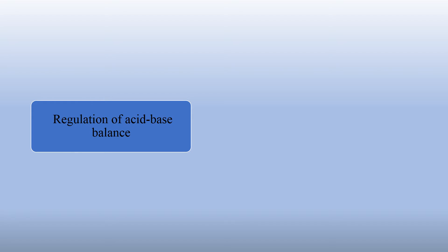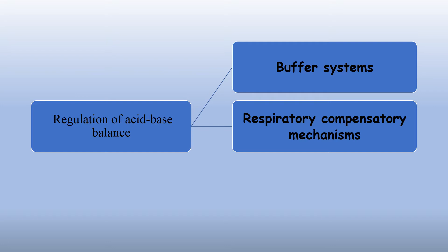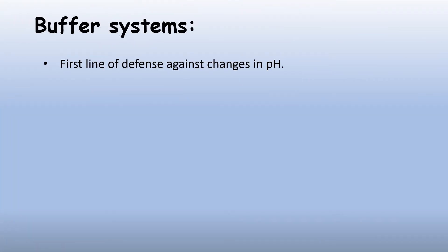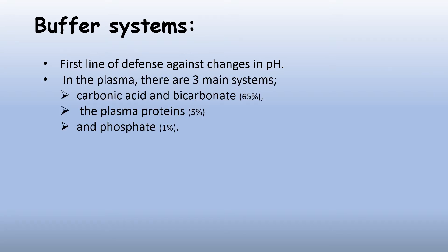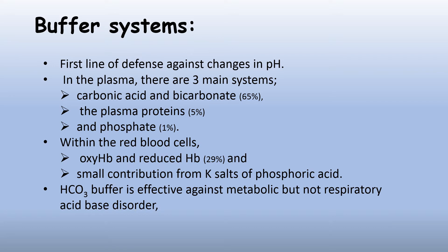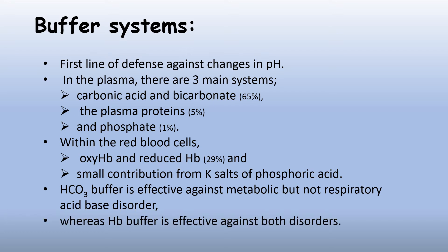Regulation of acid-base balance is done by three mechanisms: the buffer system, the respiratory compensatory mechanism, and the renal compensatory mechanisms. The buffer system is the first line of defense against changes in pH. In the plasma, there are three main systems: carbonic acid and bicarbonate, plasma proteins, and phosphate. Within the red blood cells, there is oxyhemoglobin and reduced hemoglobin, and a small contribution of the potassium salt of phosphoric acid. Bicarbonate buffer is effective against metabolic but not respiratory acid-base disorders, whereas hemoglobin buffer is effective against both disorders.